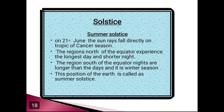Sixth, 21st June is the longest day and the shortest night in the northern hemisphere, while it is the shortest day and longest night in the southern hemisphere. Seventh, during the summer solstice, the north pole is inclined towards the sun, and the places beyond the Arctic Circle receive continuous sunlight for about 6 months, while the south pole remains in darkness for about 6 months. This was all about the summer solstice.